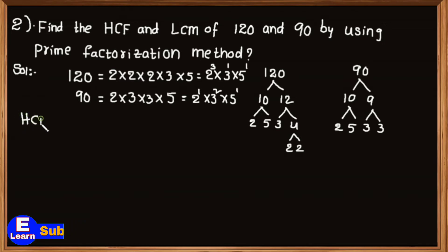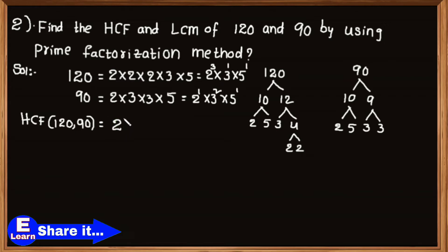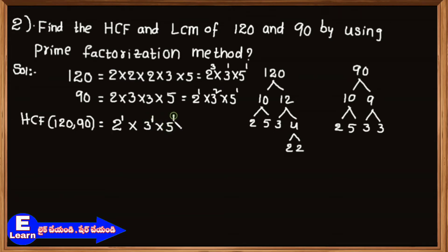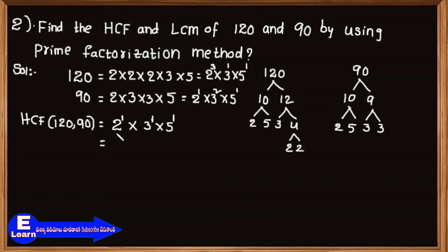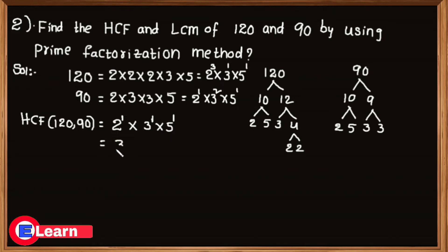The product of smallest powers of common prime factors is known as HCF. Here 2, 3 and 5 are the common prime factors of 120 and 90, and their smallest powers are 2 to the power 1, 3 to the power 1 and 5 to the power 1. So HCF of 120 and 90 is equal to 2 to the power 1 multiplied by 3 to the power 1 multiplied by 5 to the power 1, that equals 30.